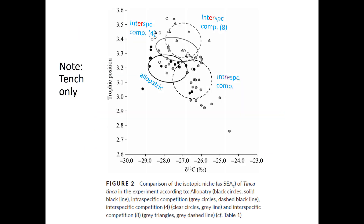That takes us to Figure 2, which is also a bit complex but manageable. We've got four different treatments: tench growing allopatrically as the reference condition; a dashed circle representing elevated intra-specific competition with 12 individuals instead of 8; and then inter-specific competition that's moderately strong — four of all three species — and stronger still — eight of all three species.